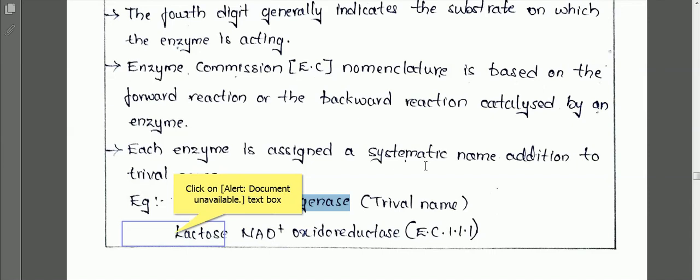This enzyme commission nomenclature is based on both the forward reaction and the backward reaction catalysis — not only forward reactions are considered, but both forward and backward reaction catalysis are considered. Even though we have developed this EC nomenclature, we also still use trivial names, which are the commonly used names.